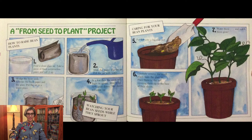In a few days, the seeds will begin to sprout. Watch the roots grow down and the shoots will grow up. Put soil into a big clay pot and carefully remove the small plants from the glass jar. Place them in the soil, covering them up to the base of their shoots. Water them and watch them grow.